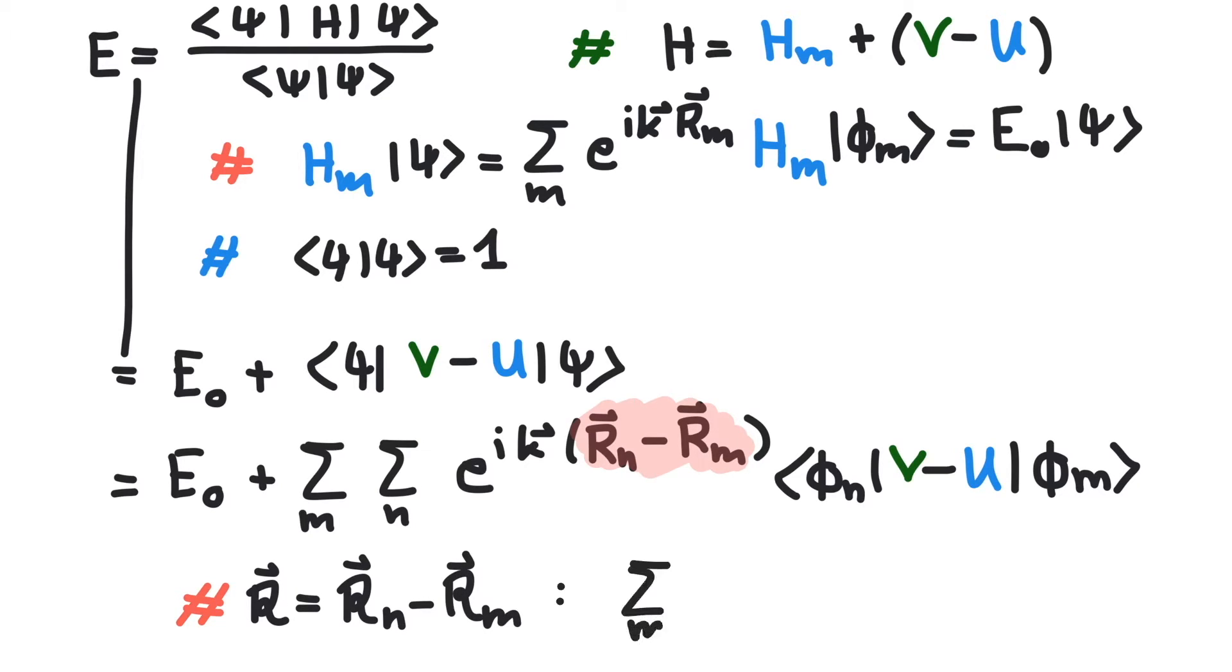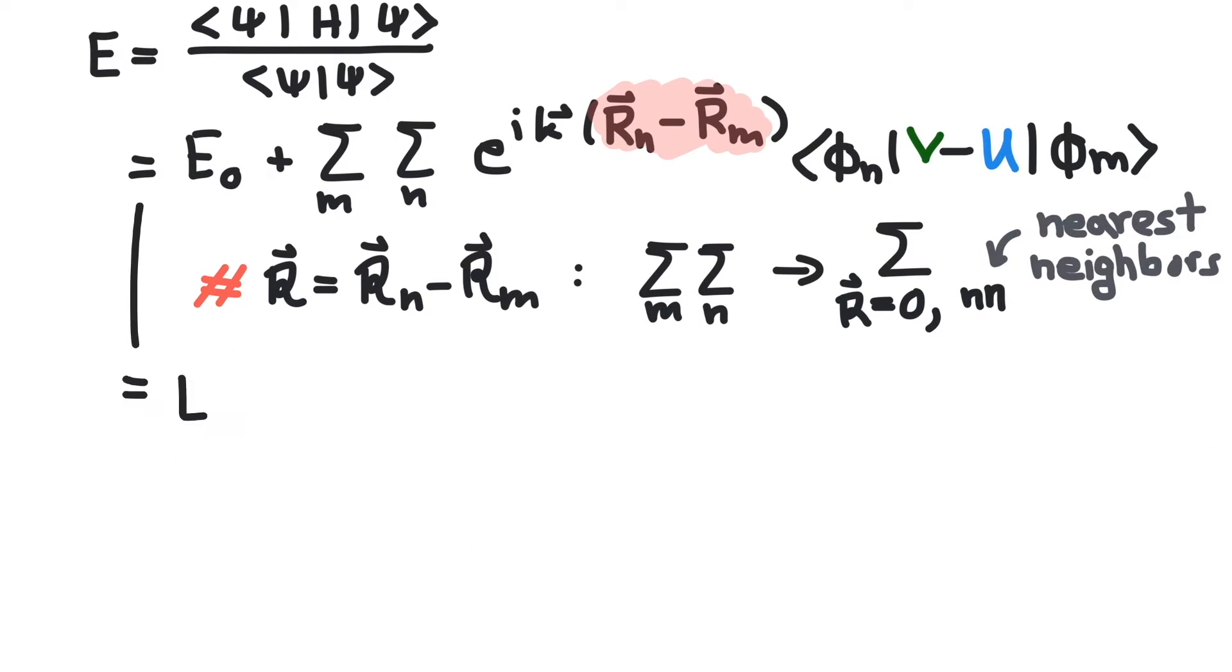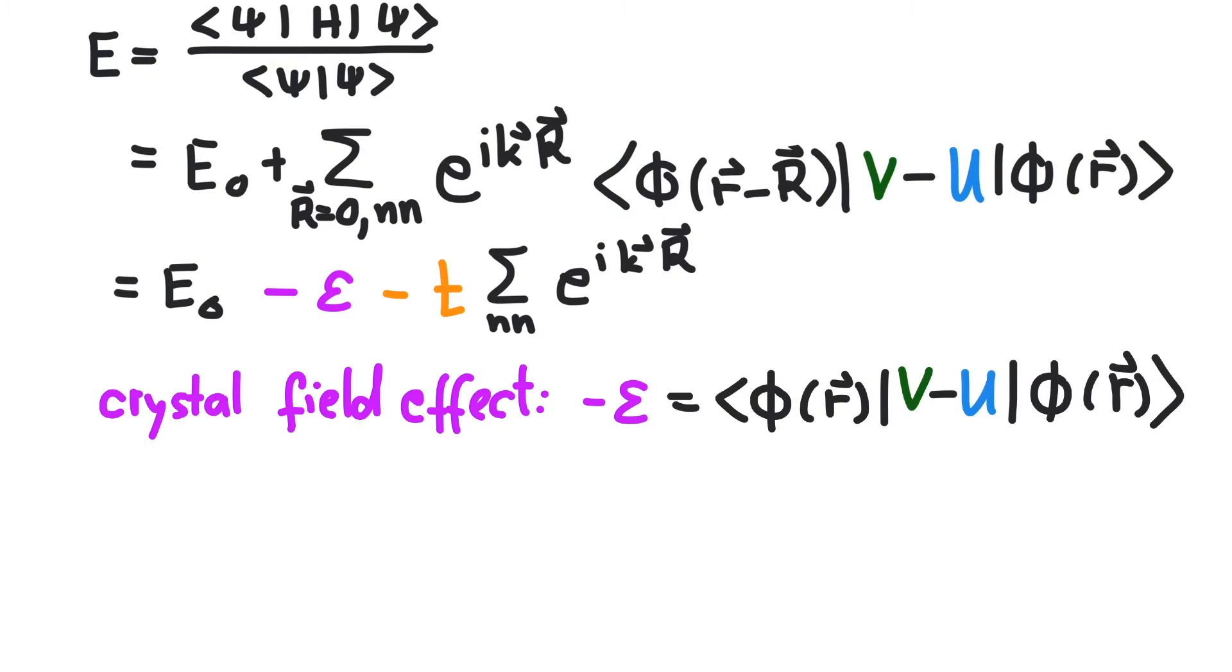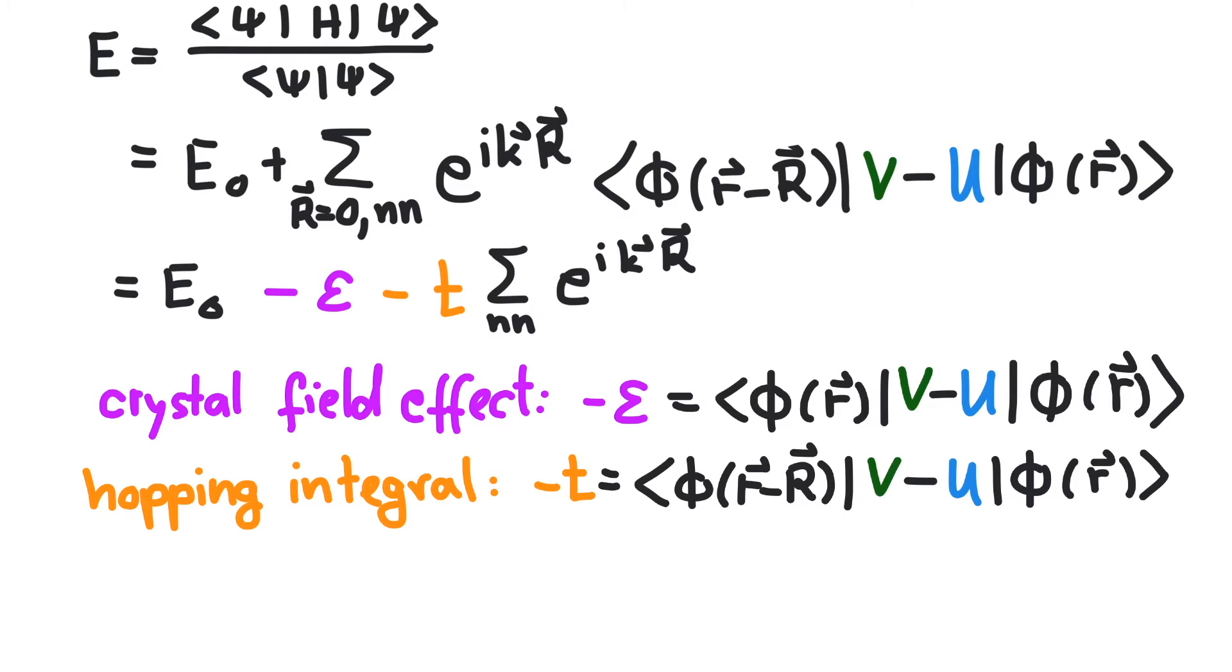In this way, we can choose not to sum over all atoms, but to only consider the atom itself and its nearest neighbors. The sum gets further separated in the on-site crystal field effect and the hopping integral. The first acts merely like an energy shift, but the second describes how an electron moves from one site to any of its neighbors.